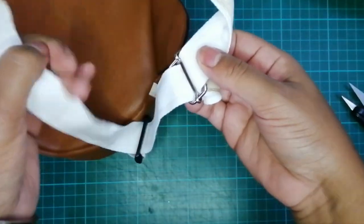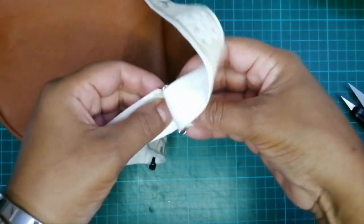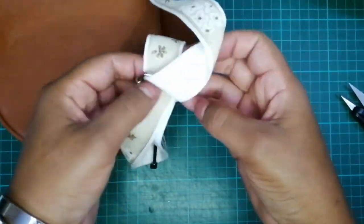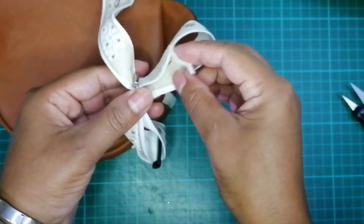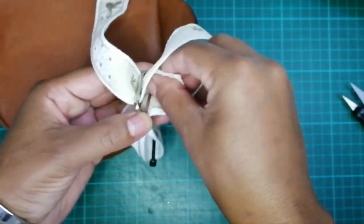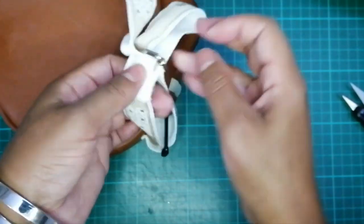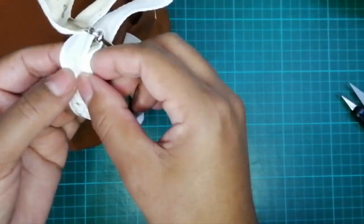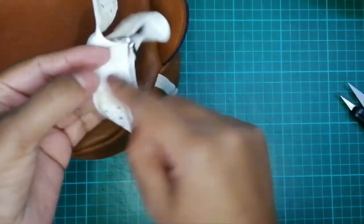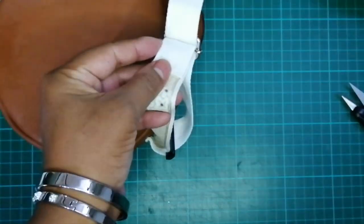Now thread the strap back through the slider adjuster, but this time from underneath. Once it's threaded through, sew it where I am indicating.